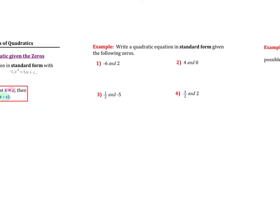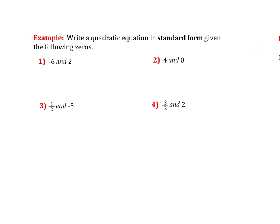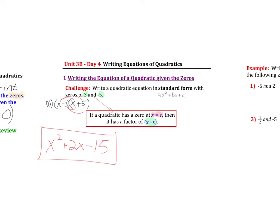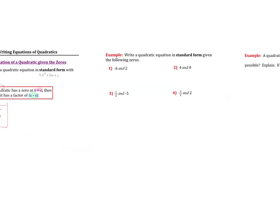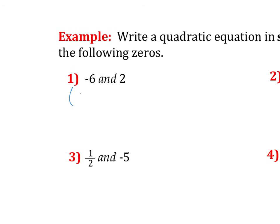So now we have some practice problems. We're going to write the quadratic equation again in standard form, given zeros. So just like before, we're going to start off and write these things in factored form. And then once it's in factored form, we'll throw it into standard form. So number one, if I have two x-intercepts at negative 6 and positive 2, then my factors would have to be x plus 6 and x minus 2.